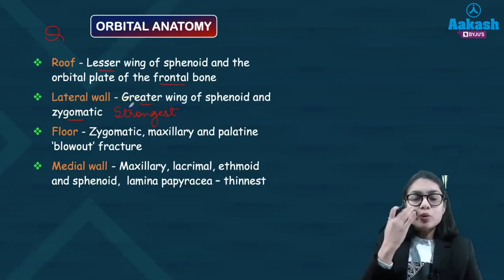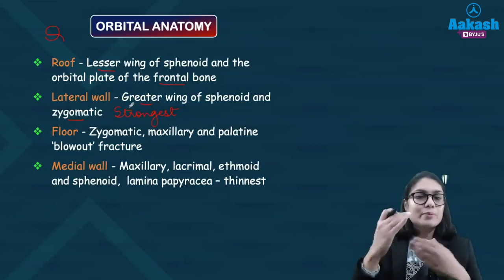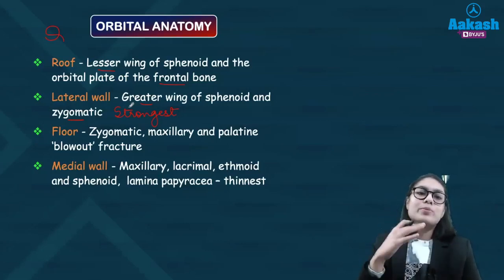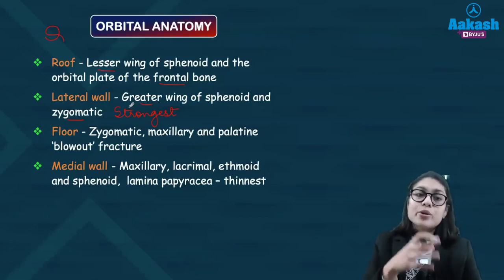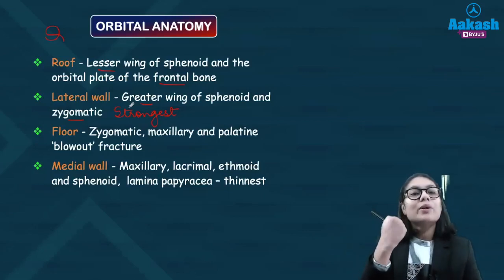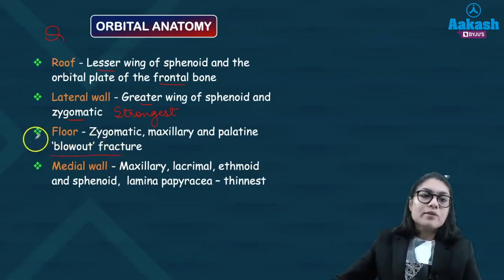Now coming onto the floor. The floor is basically formed by the zygomatic bone, maxillary bone, and the palatine bone posteriorly. It is the floor which will get fractured during a blowout trauma or closed globe injury, producing a blowout fracture due to fracture of the inferior wall or the floor of the orbit.